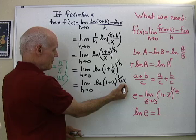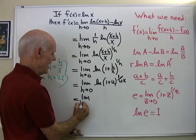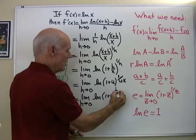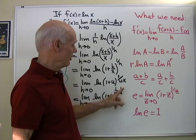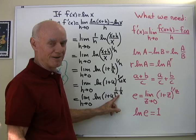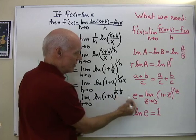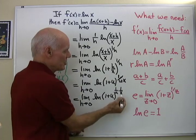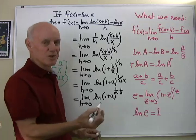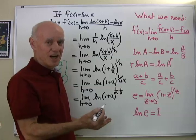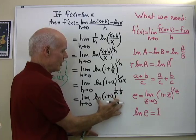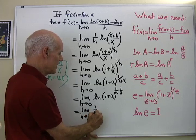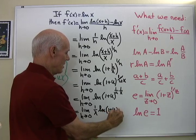I split the exponent: 1/(u·x) = (1/u)·(1/x). So this becomes lim(h→0) of ln((1+u)^((1/u)·(1/x))). Since 1/x doesn't depend on h or u, I can bring it out in front as a coefficient: lim(h→0) of (1/x) · ln((1+u)^(1/u)).